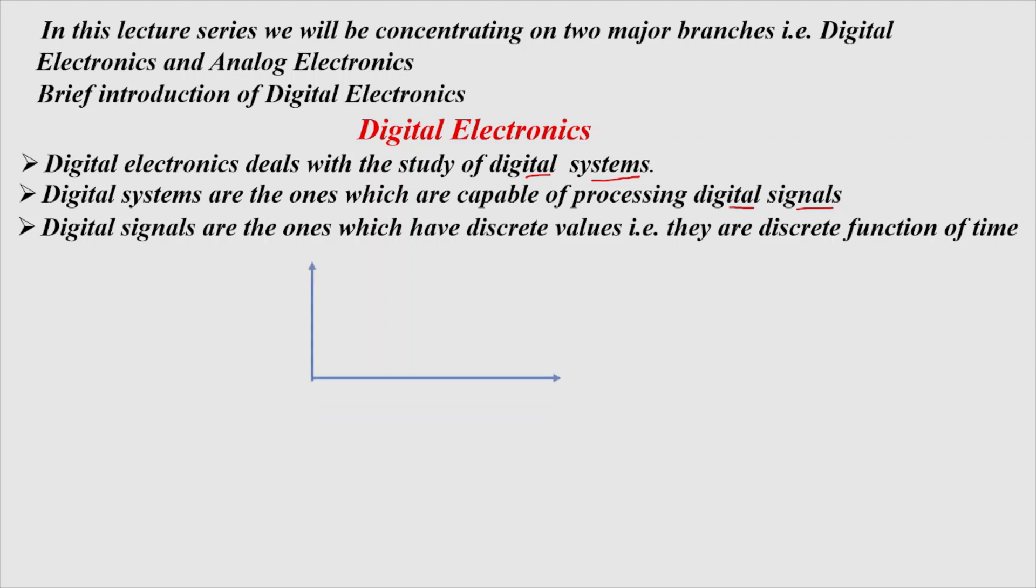This can be understood by a graph. Suppose we have a voltage signal. Then it will be having discrete values of voltage at discrete intervals of time like this.